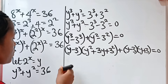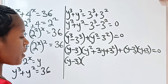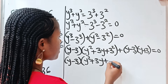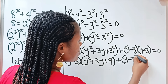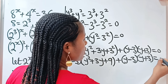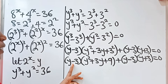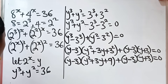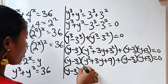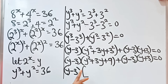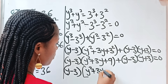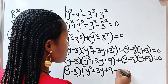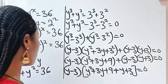Now let us work this out. We have (y minus 3)(y squared plus 3y), and 3 squared gives us 9, so it's plus 9, plus (y minus 3)(y plus 3) is equal to 0. Now we have (y minus 3) in both terms, so we factor it out. We pick one (y minus 3). When this is divided by itself, we are left with y squared plus 3y plus 9, plus y plus 3, is equal to 0.